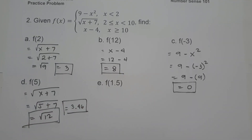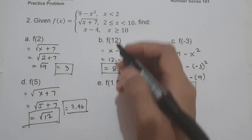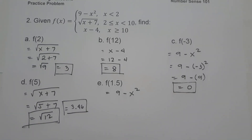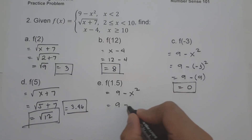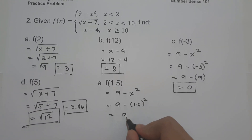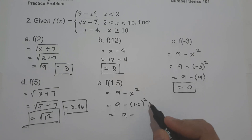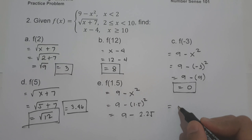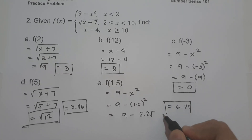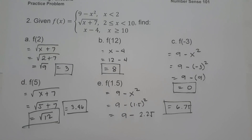On letter e, f of 1.5. Since 1.5 is less than 2, we use 9 minus x squared. So 9 minus 1.5 raised to 2, which is 2.25. And 9 minus 2.25 is 6.75. This will be our answer. I hope you've learned from this video. Thank you so much for watching and God bless us all.